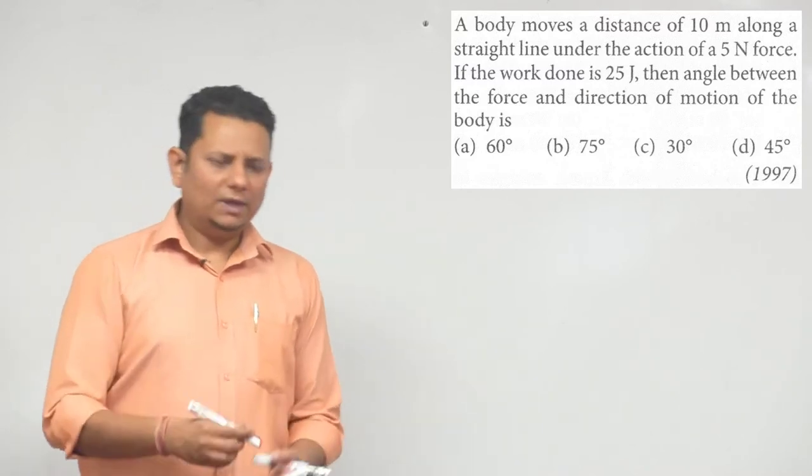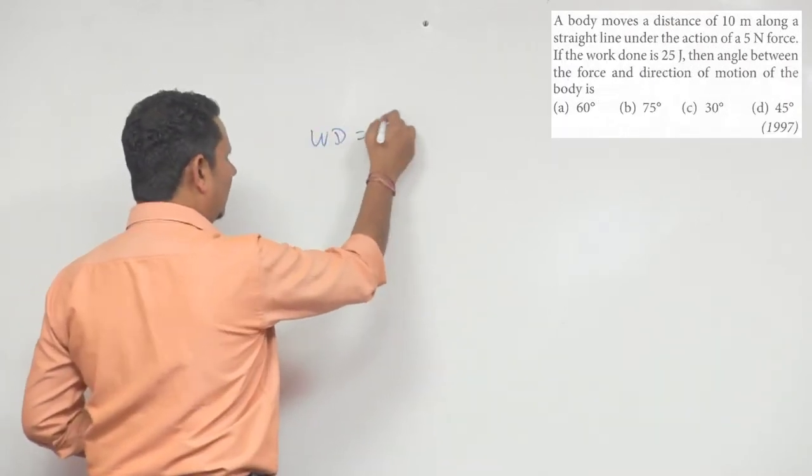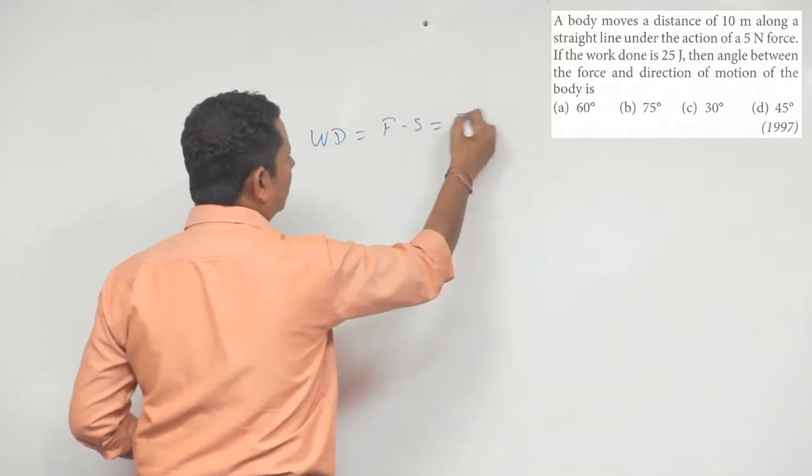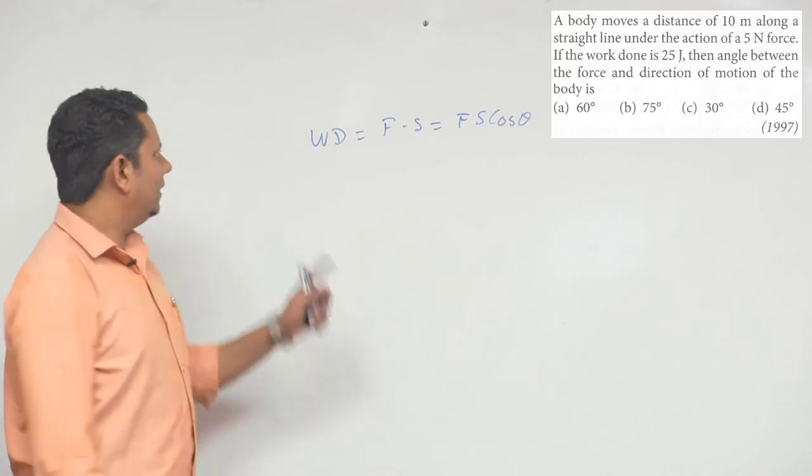Or 45 degrees. Now, it's easy to know that the work done is F dot S, which is called F·S·cos θ. So here we have the data to solve for cos θ.